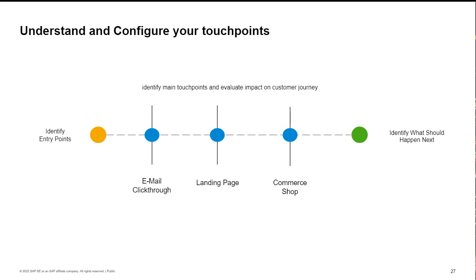The next step is to understand and configure your touchpoints — whenever you have a data collection point of contact with one of the consumers. Look at the journey of the customer and know the main entry points and what you want to achieve. Classically, emails and click-throughs have an impact. A landing page — and especially a landing page submission — has an impact. And the commerce shop and how the customer journey within it unfolds. This is an open list, and from customer projects, we see that you need priorities, because most of the time there are quite a lot of touchpoints and you cannot do it all at once.